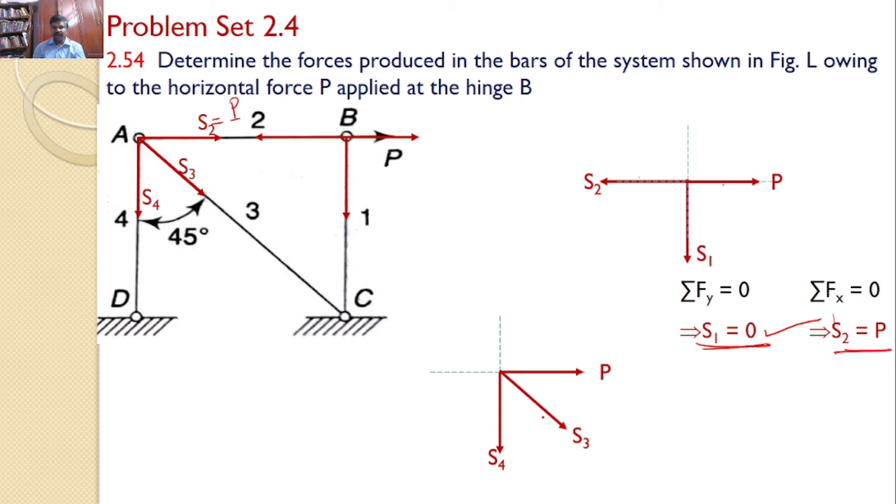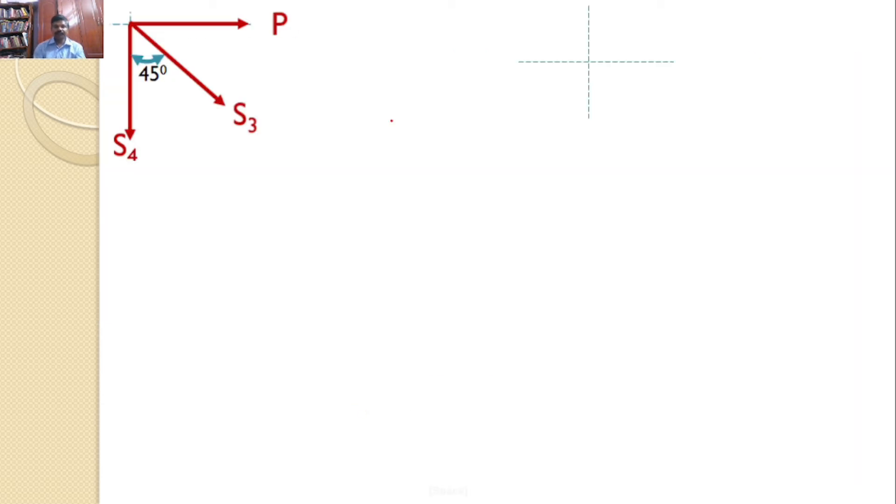Now P, S4, and S3. And you know that the angle between S4 and S3 is 45 degrees. Hence this angle is 45 degrees. Now you can resolve S3 along X-axis and Y-axis. So the horizontal component will be like this and vertical component will be like this. The vertical component is S3 cos 45, horizontal component is S3 sin 45.